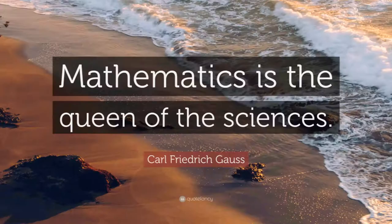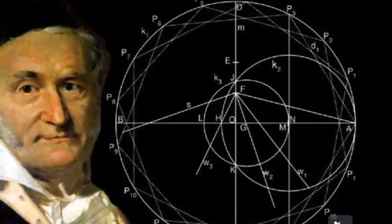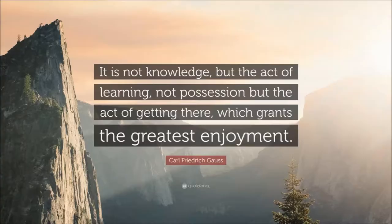Carl Gauss, 1777 to 1855. Isaac Newton is a hard act to follow, but if anyone can pull it off, it's Carl Gauss. If Newton is considered the greatest scientist of all time, Gauss could easily be called the greatest mathematician ever.